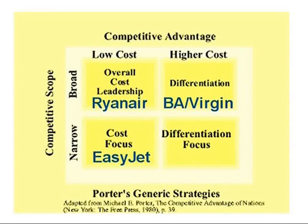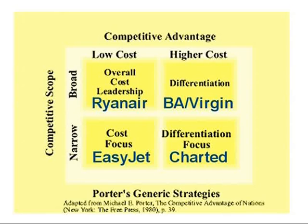A higher cost in a narrow market used to be things like Concorde, or perhaps first class. Now that might be chartered jets, where people are buying time-shares for aircraft. That's a much higher cost and obviously a narrow market. So we can see where companies' sources of competitive advantage sit against their competitive scope.